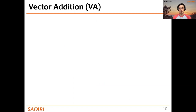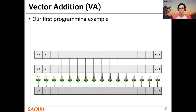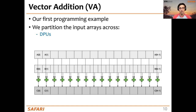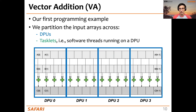We started to talk about UPMEM PIM programming a few lectures ago when we introduced our first programming example: vector addition. In vector addition, we perform the element-wise addition of two vectors A and B to obtain an output vector C. Inside the UPMEM-based PIM system, we partition the input and output arrays equally across the available DPUs, and then inside each DPU, we distribute the computation among the available software threads, called tasklets.